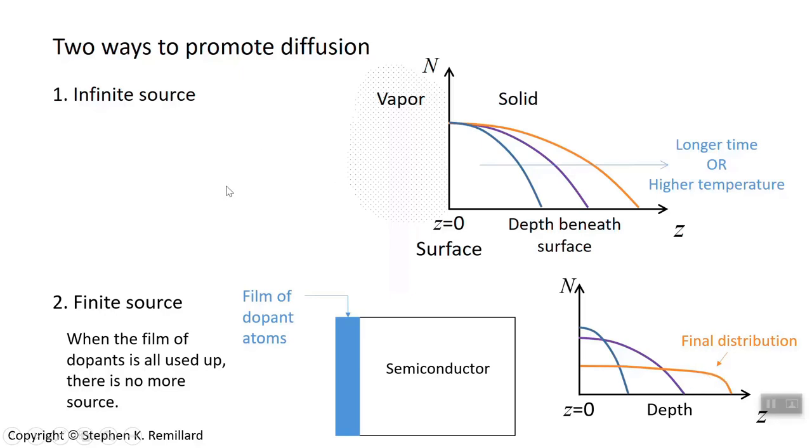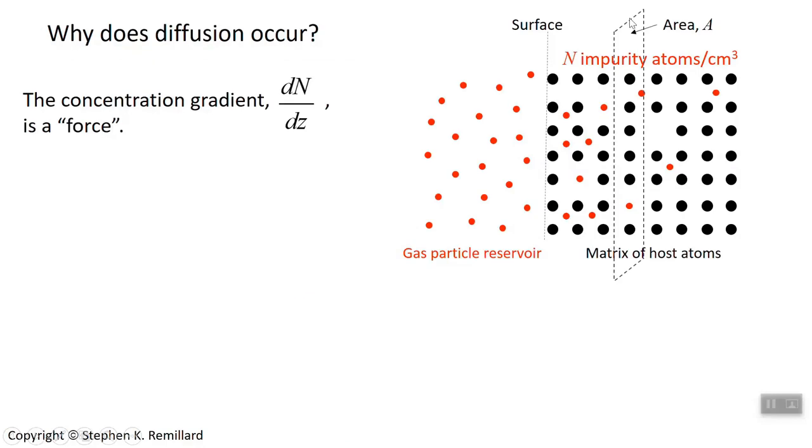Those are two ways to promote diffusion that are used. Just a little bit about why diffusion occurs. Diffusion of dopants into the crystal happen because there is a gradient of dopant concentration, more of them in one place, near the surface, than in another place, deep inside. And so the atoms at the surface feel a force going the other way. Think of it this way.